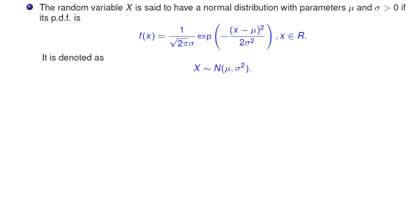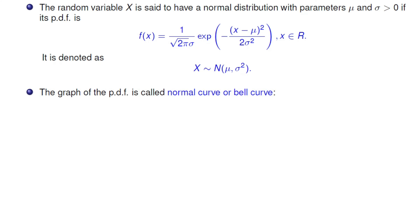So firstly, let's talk about the definition. A random variable is said to have a normal distribution with parameters mu and sigma if its probability density function, or PDF, is given as follows. This is a very complicated formula. We will denote this random variable as follows: X has a normal distribution with mean mu and variance sigma squared. The notation is N in parentheses, with first entry mu and second entry sigma squared.